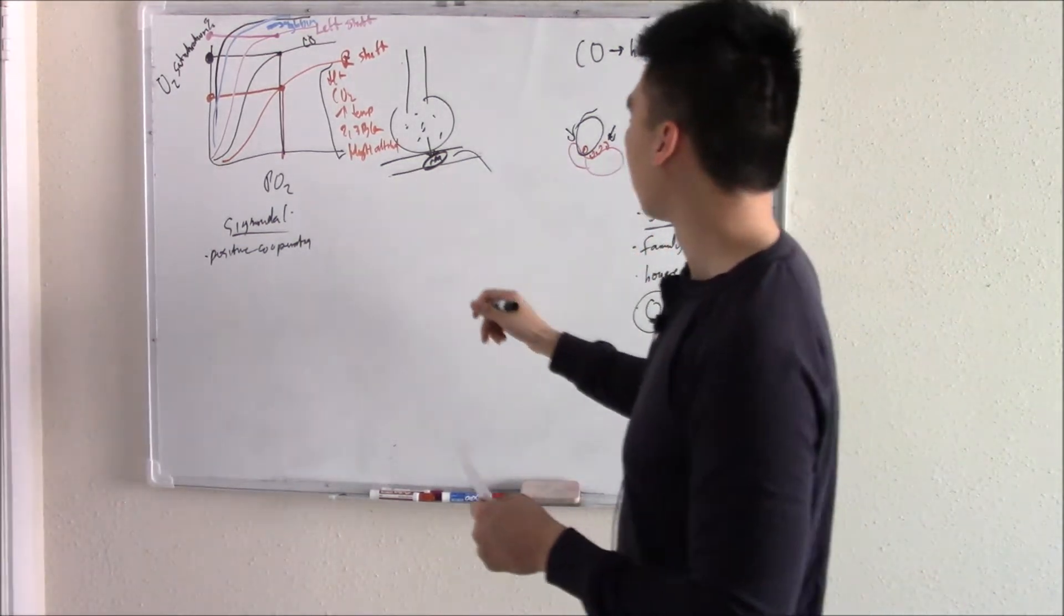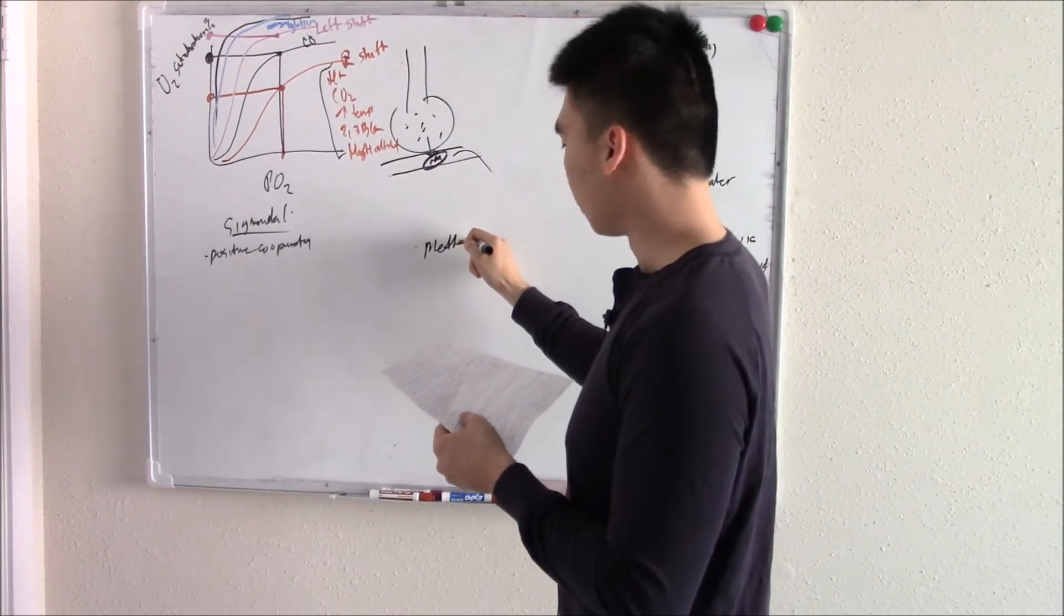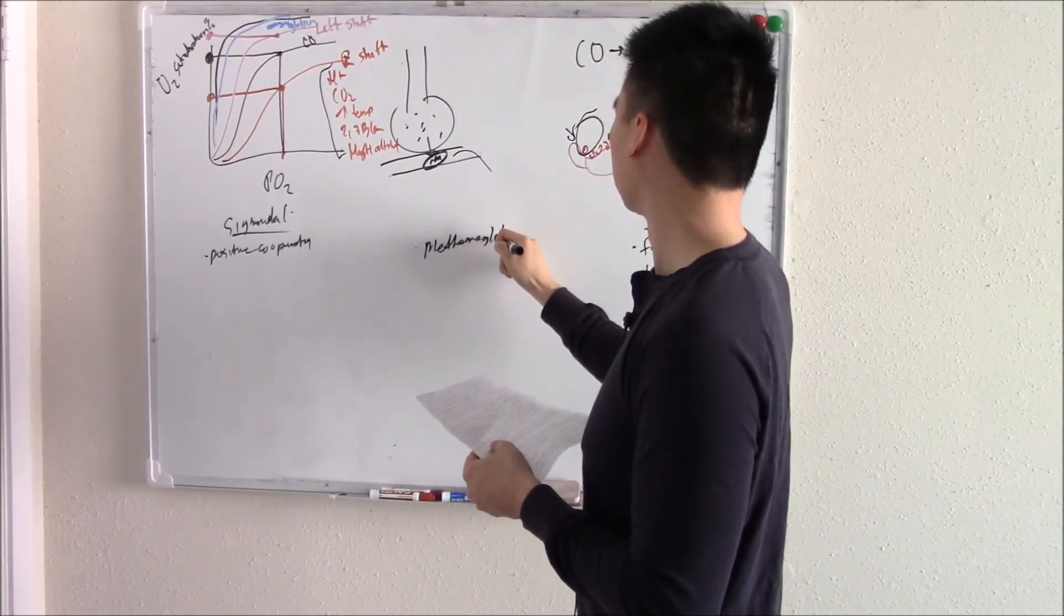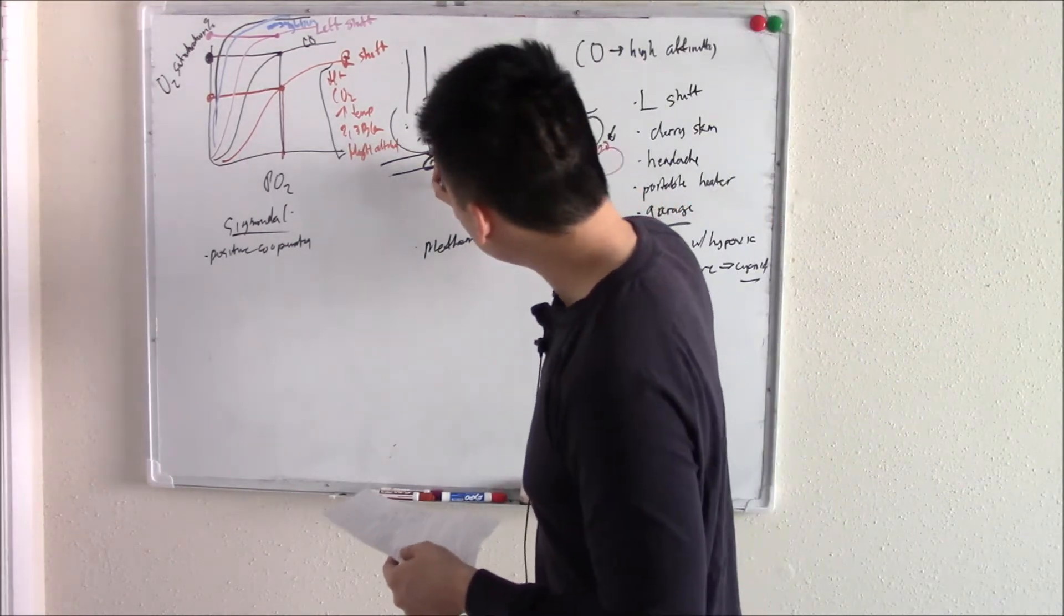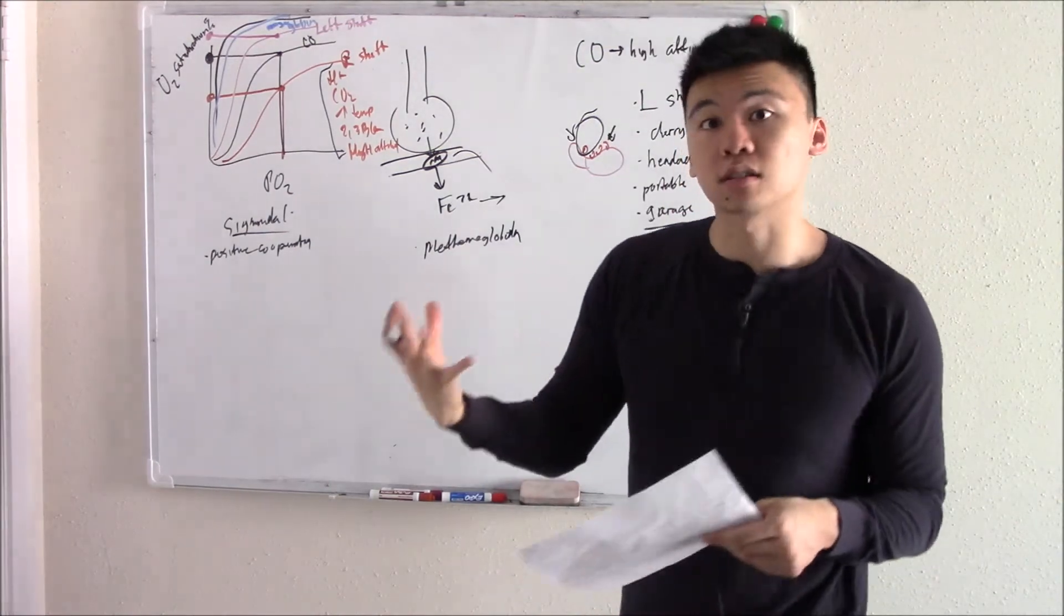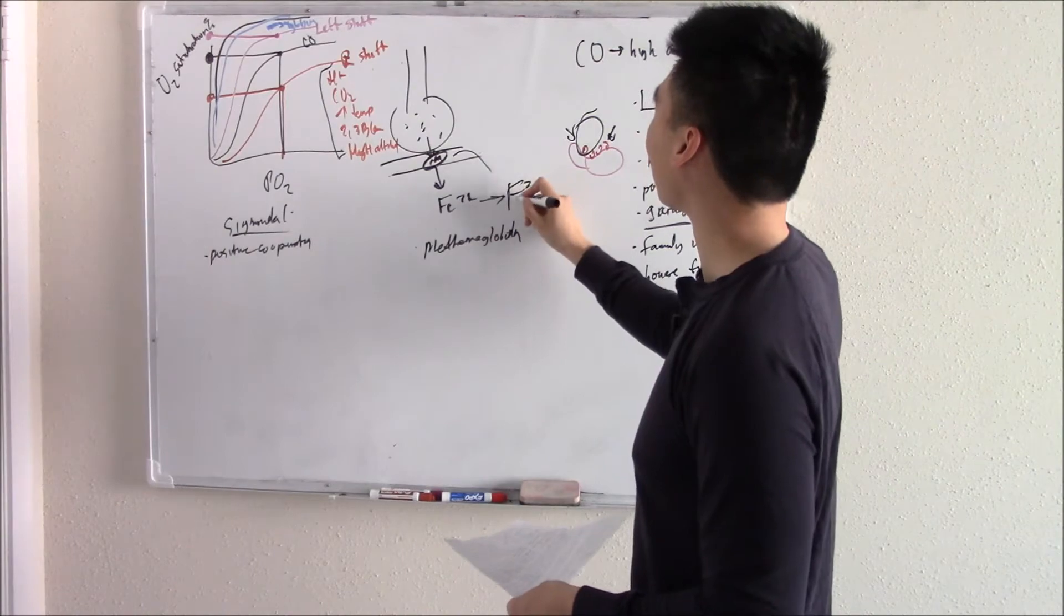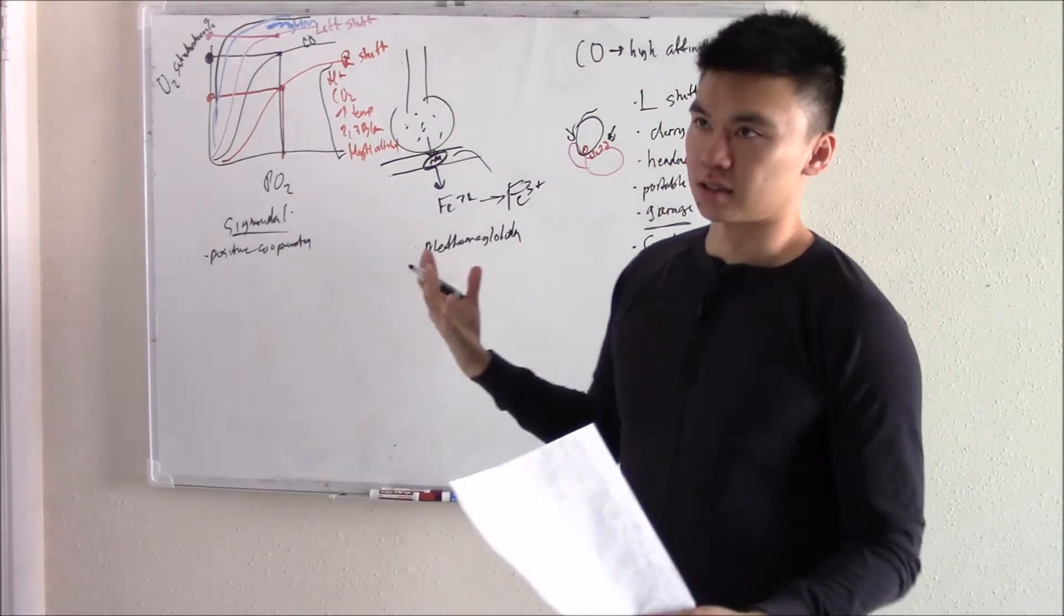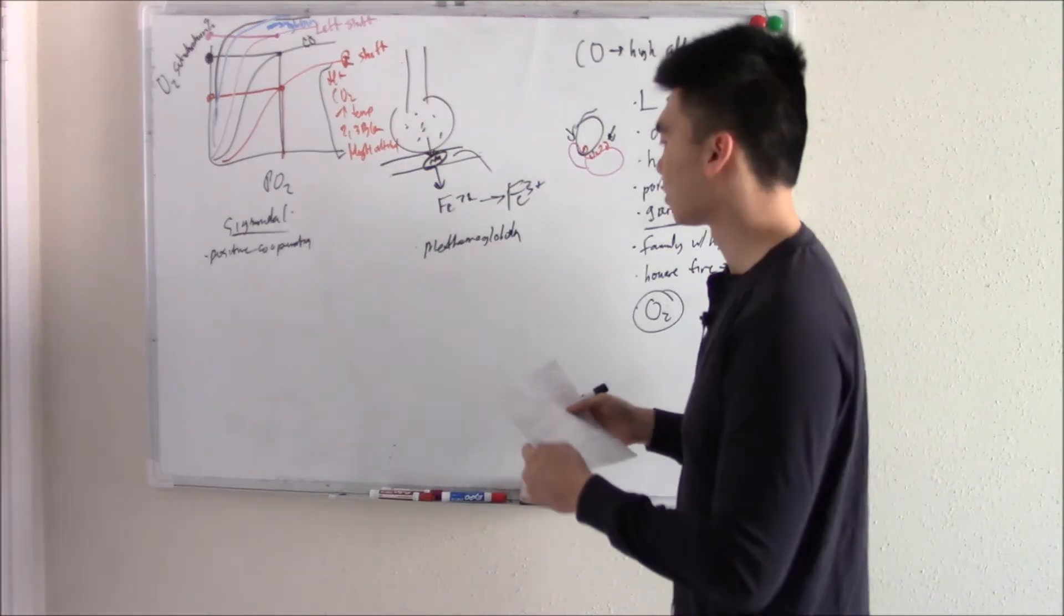Maybe our next one is going to be methemoglobin. Hemoglobin has iron in it in the form of Fe2+, and that Fe2+ can be oxidized. That's an O-chem term. It can be oxidized to Fe3+. Fe3+ doesn't bind oxygen. If it can't bind oxygen, you get hypoxia. Absolutely right.